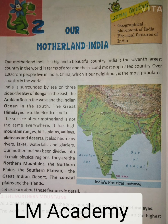The surface of our motherland is not the same everywhere. Hamare matra bhoomi ki satah har jagah ek saman nahin hai. It has high mountain ranges, hills, plains, valleys, plateaus and deserts. Ismein unche pahad, parvat shrinkhalaen, pahadian, maidan, ghatiyan, pathar aur registaan hai. It also has many rivers, lakes, waterfalls and glaciers. Ismein nadiyan, jheel, jharne aur himnad bhi hai.